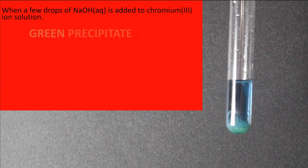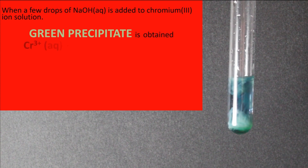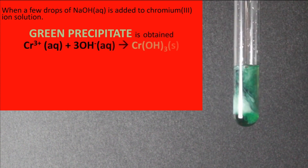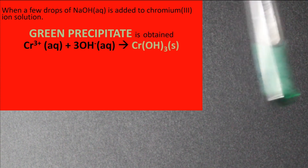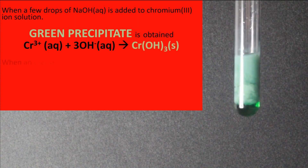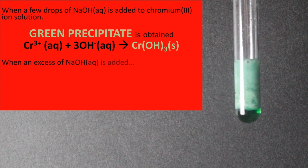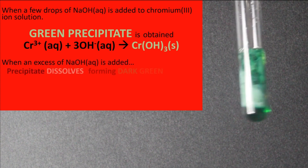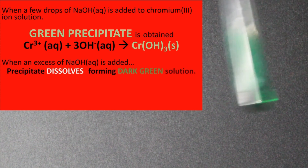Chromium ions give a green precipitate with aqueous sodium hydroxide. This precipitate is soluble in excess sodium hydroxide, forming a dark green solution.